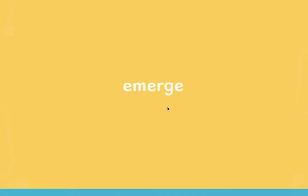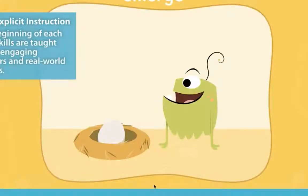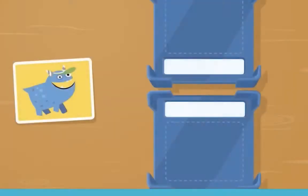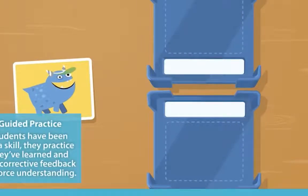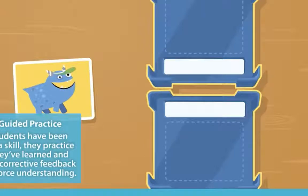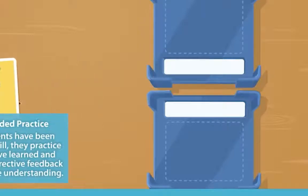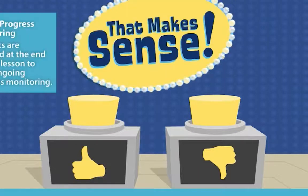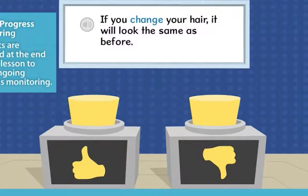Each online lesson follows the same instructional format. Each lesson begins with explicit instruction, teaching skills with familiar characters and real-world scenarios. The lessons continue with guided practice — once the skill has been taught, students practice what they've learned and receive corrective feedback to reinforce understanding. The lessons conclude with progress monitoring: a short assessment and check for understanding.